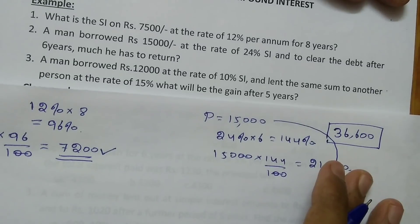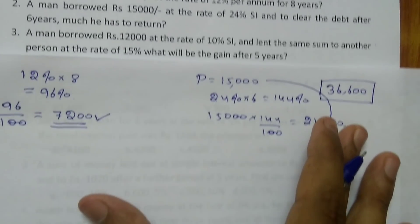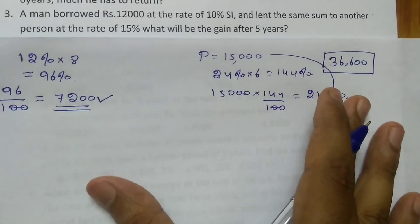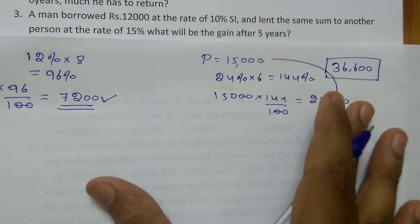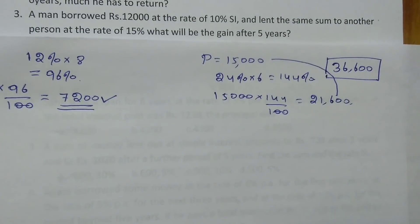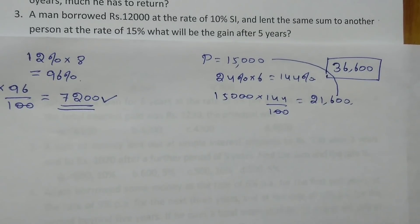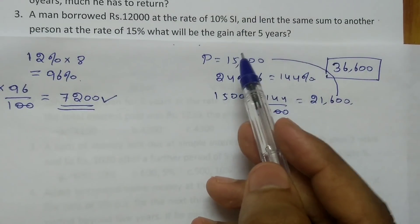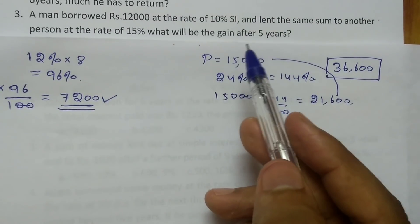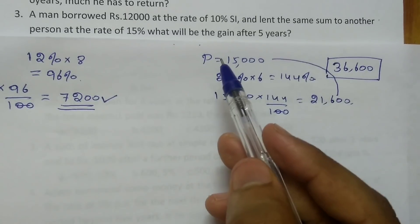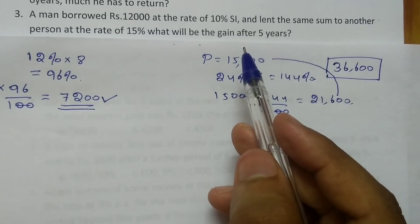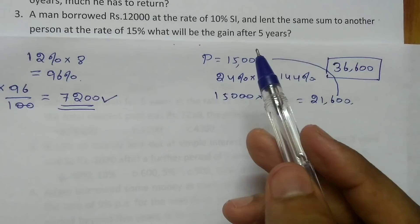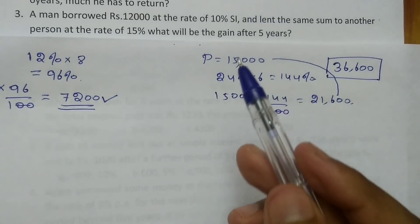Third question: a man borrowed Rs.12000 at the rate of 10% simple interest and lent the same sum to another person at the rate of 15%. What will be the gain after 5 years? For this type of question you don't need pen and paper — you can solve it using oral calculation.